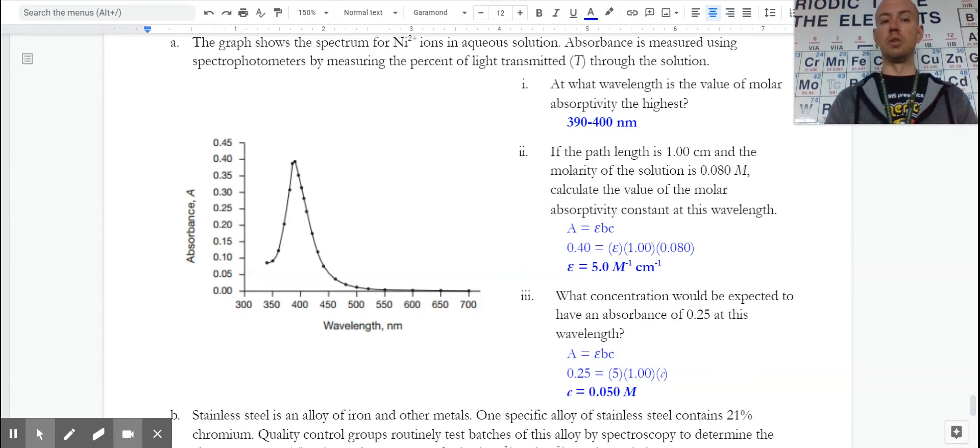In that case, we would look at the absorbance of 0.25. We would go over, we would drop down from our line to see where that hits the x-axis, which we would see corresponds very closely to this molarity.